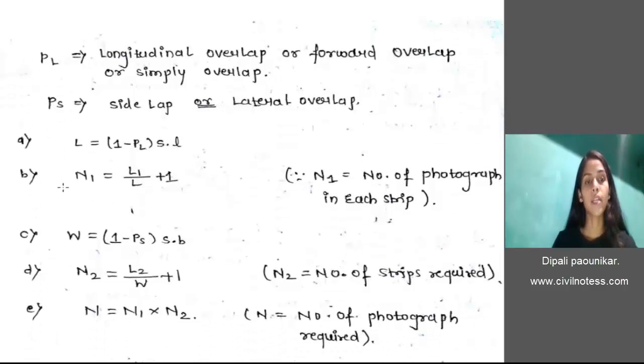After calculating the value of L, W, and N1 into N2, we get the value of number of photographs required: N equals N1 into N2.